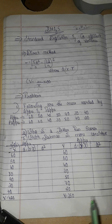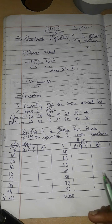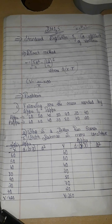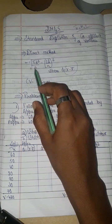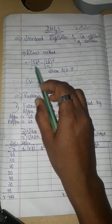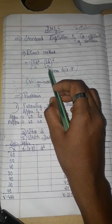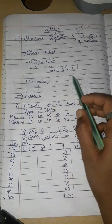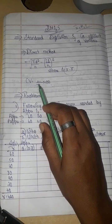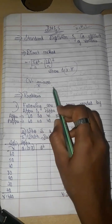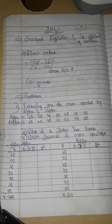If you have a frequency, you can follow that method. Without frequency, I will explain how to do it. The formula is: sigma equals root of (sigma d² divided by n) minus (sigma d divided by n) whole square, where d is x minus x̄. CV can be found as sigma divided by x̄ into 100.